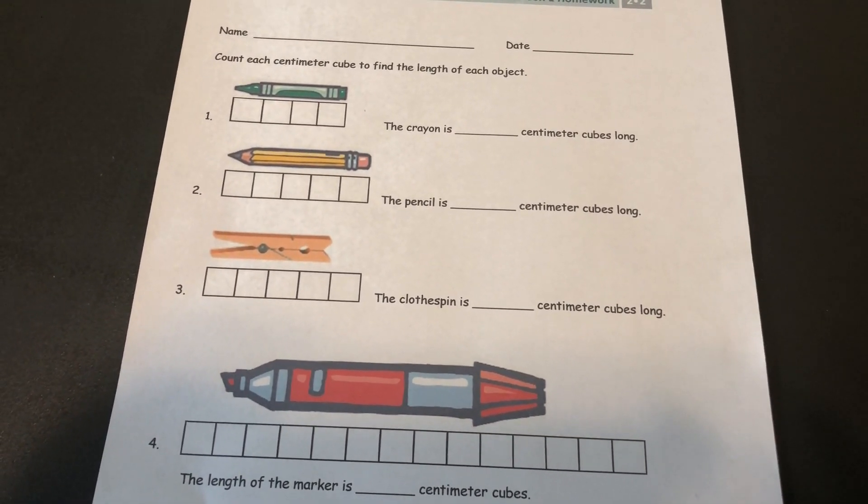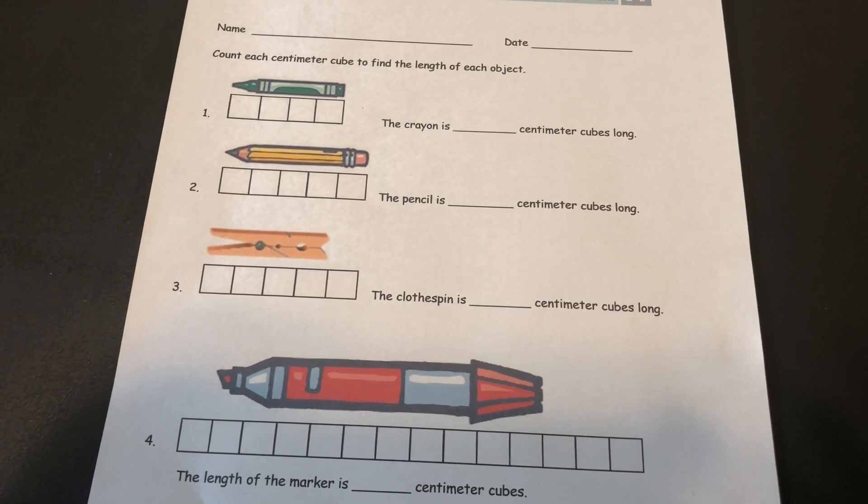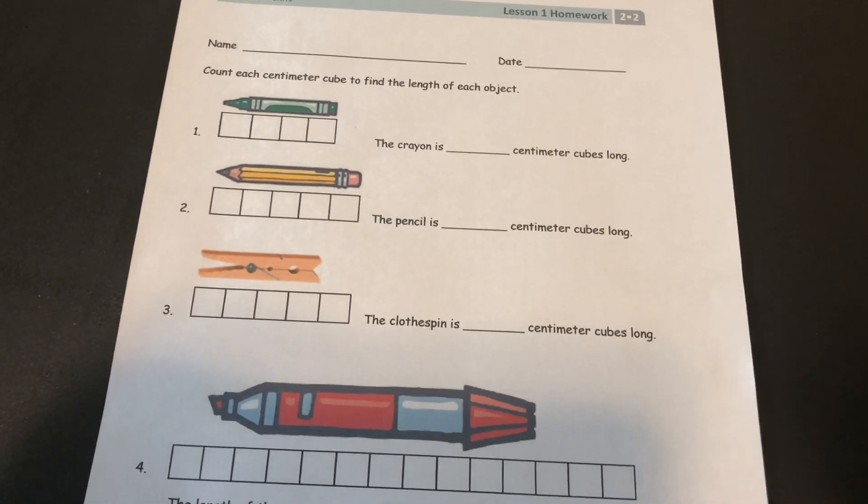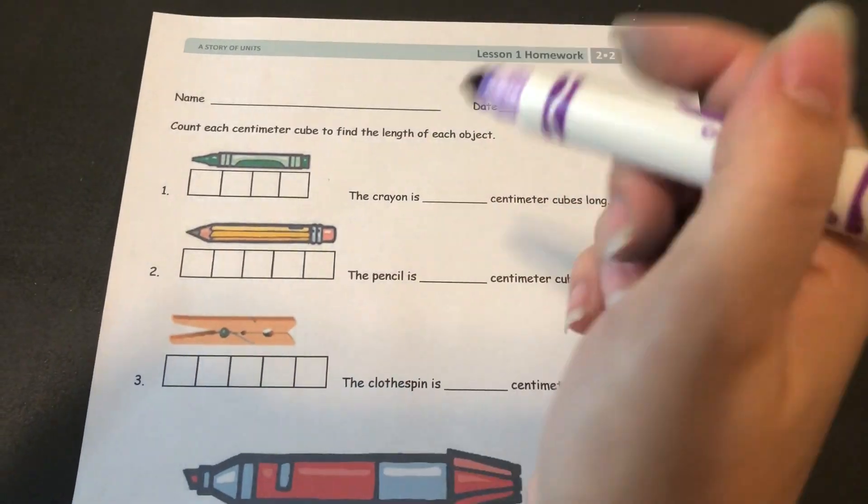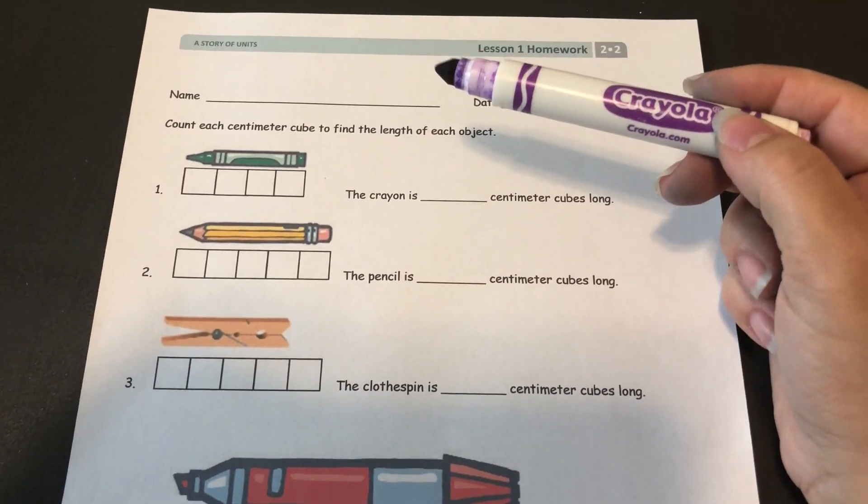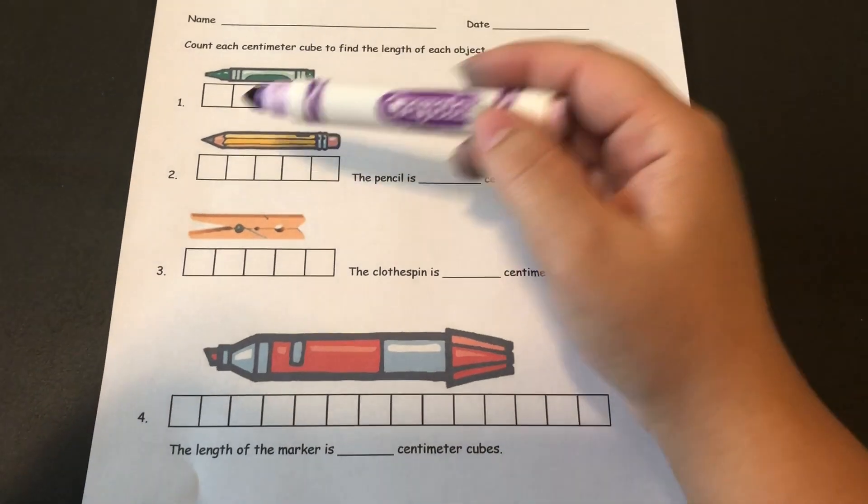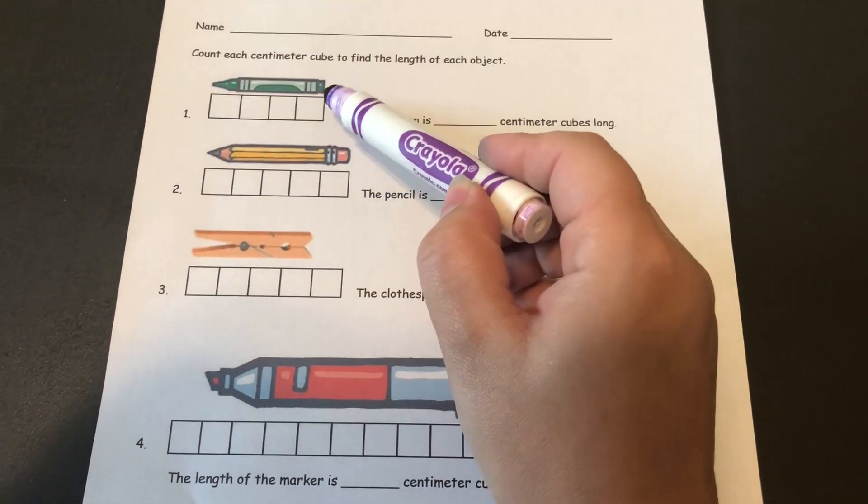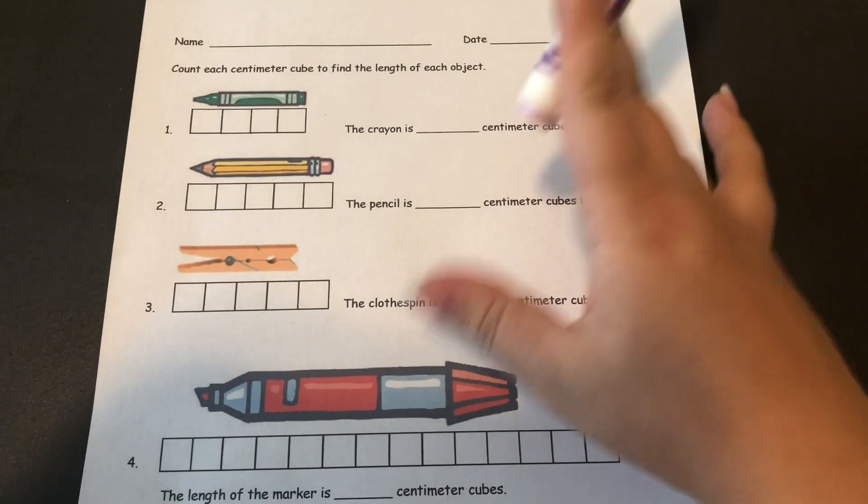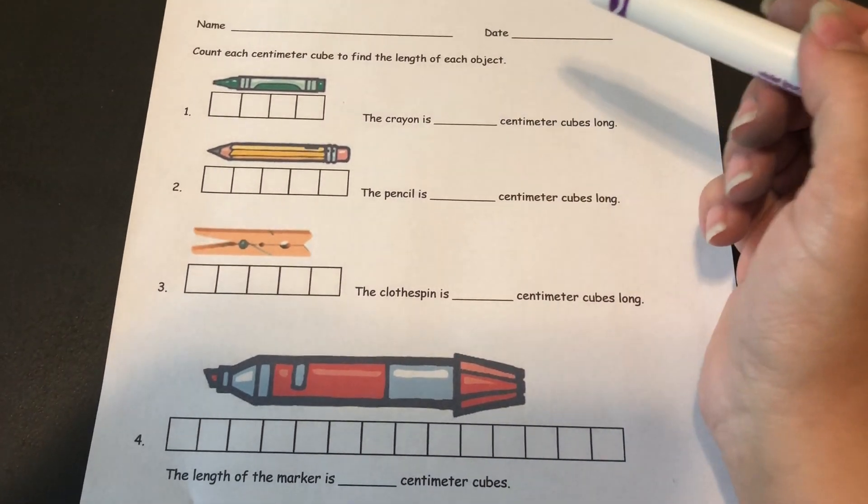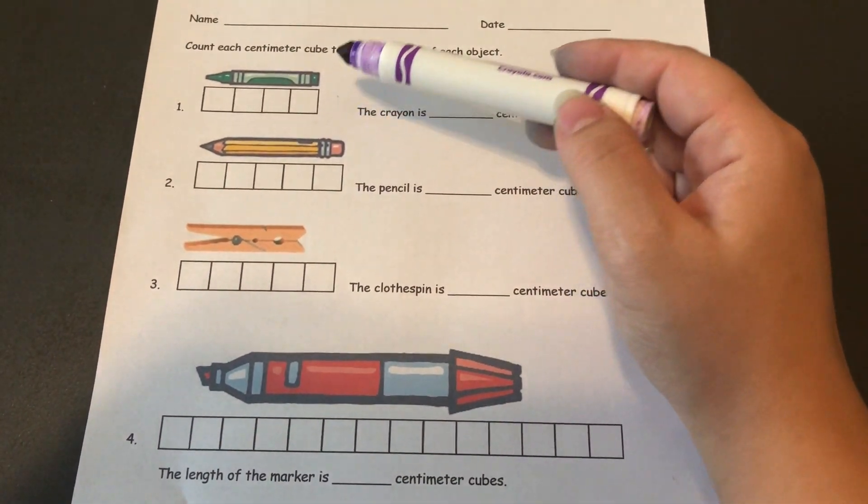So eventually we're going to be using our rulers, but for right now we're going to measure using centimeter cubes. So for the first part of your homework they've actually drawn the centimeter cubes for you. So you're gonna count up the centimeter cubes and see how long each item is.